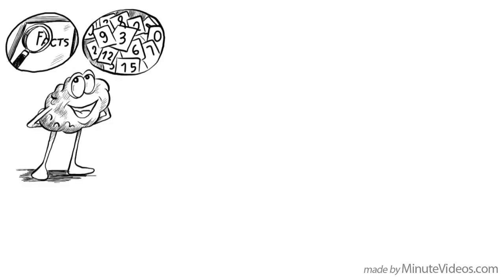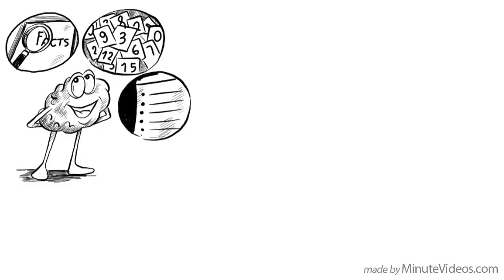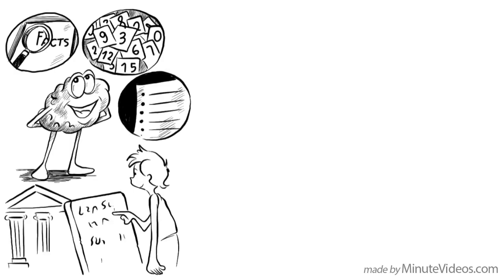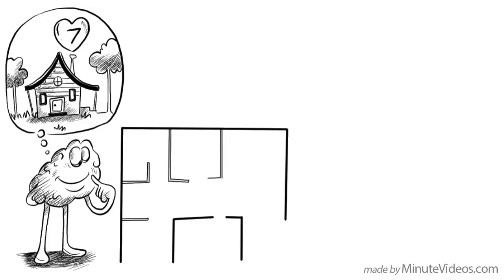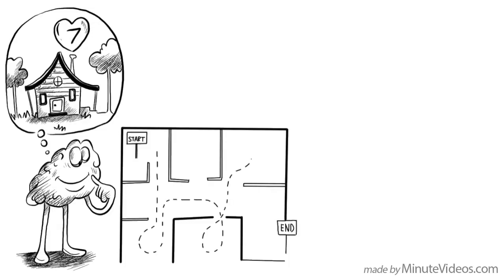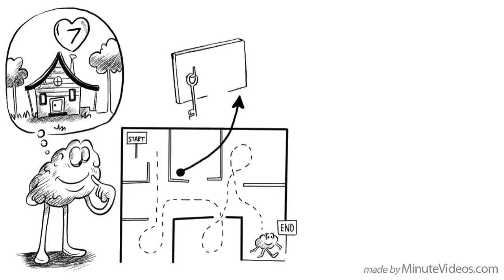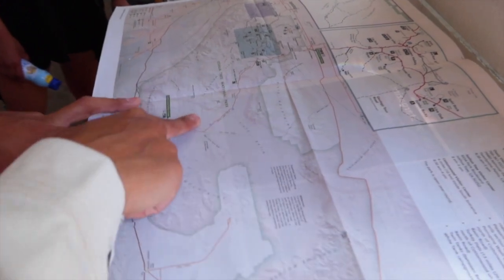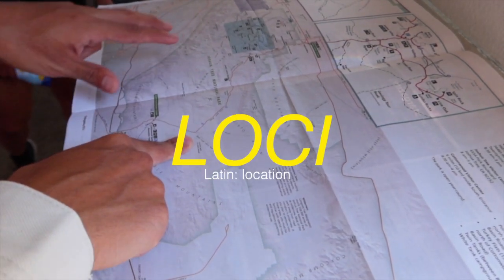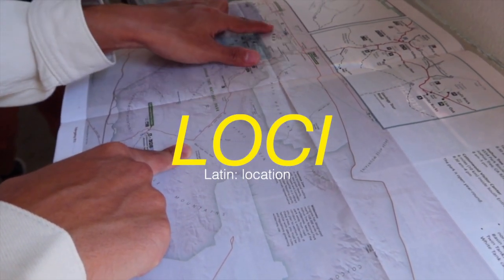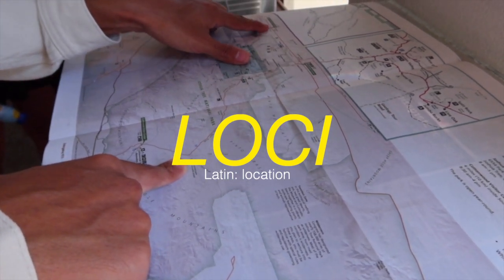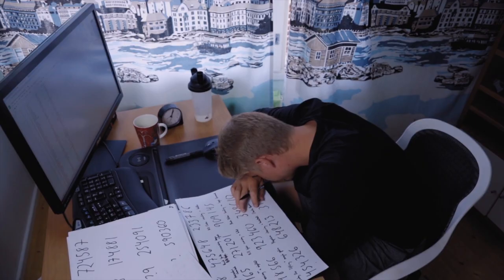The memory palace is an imaginary location in your mind where you can store images. The most common type involves making a journey through a place you know well, like a building or a town. Along that journey there are specific locations you always visit in the same exact order. These locations are called loci, which is Latin for locations, and you create a visual story around the words or characters you're trying to remember.